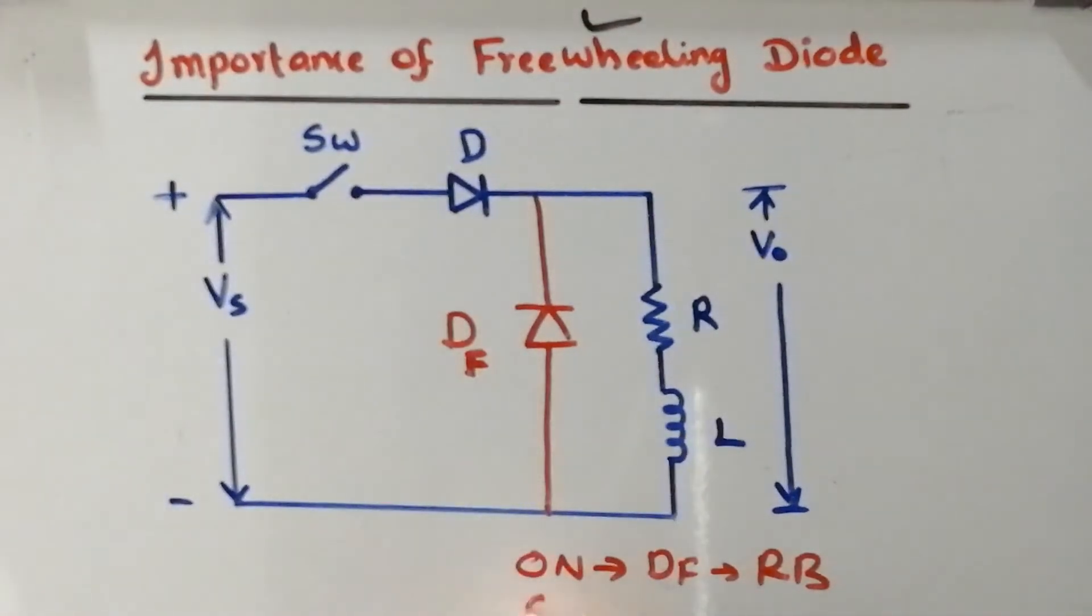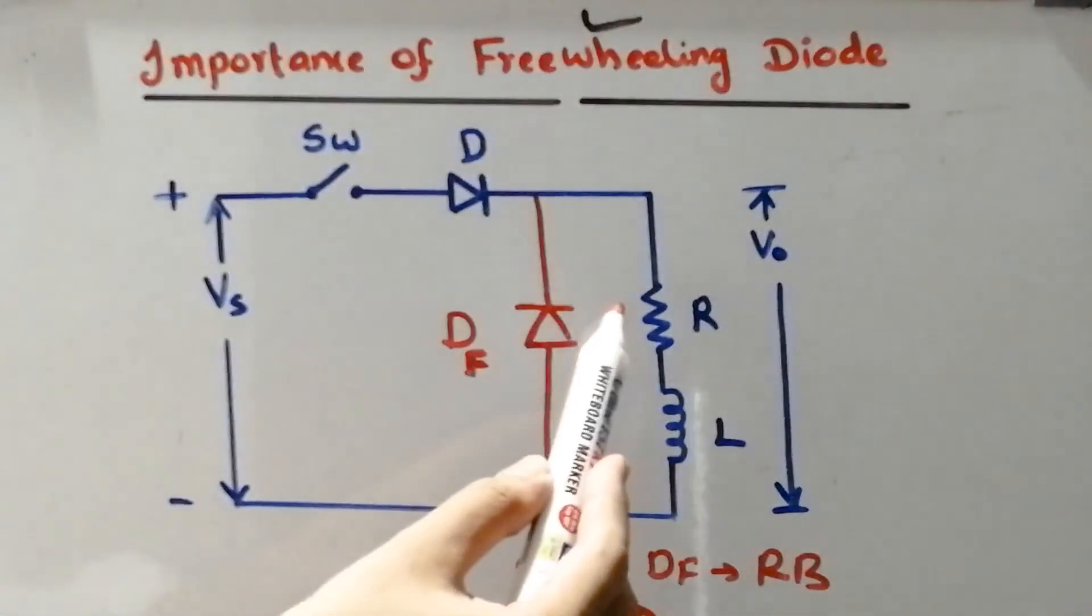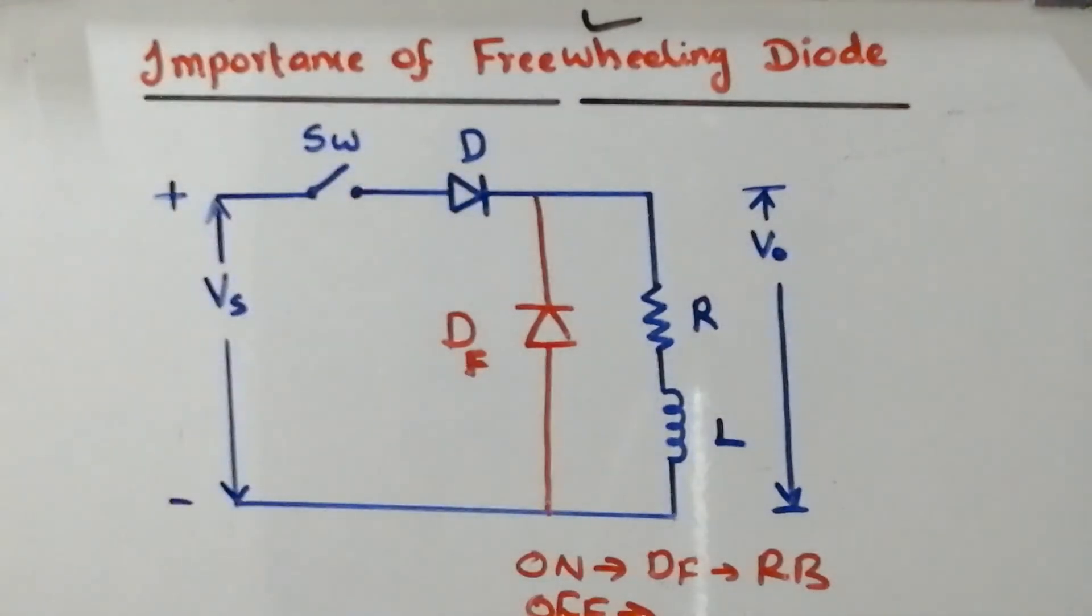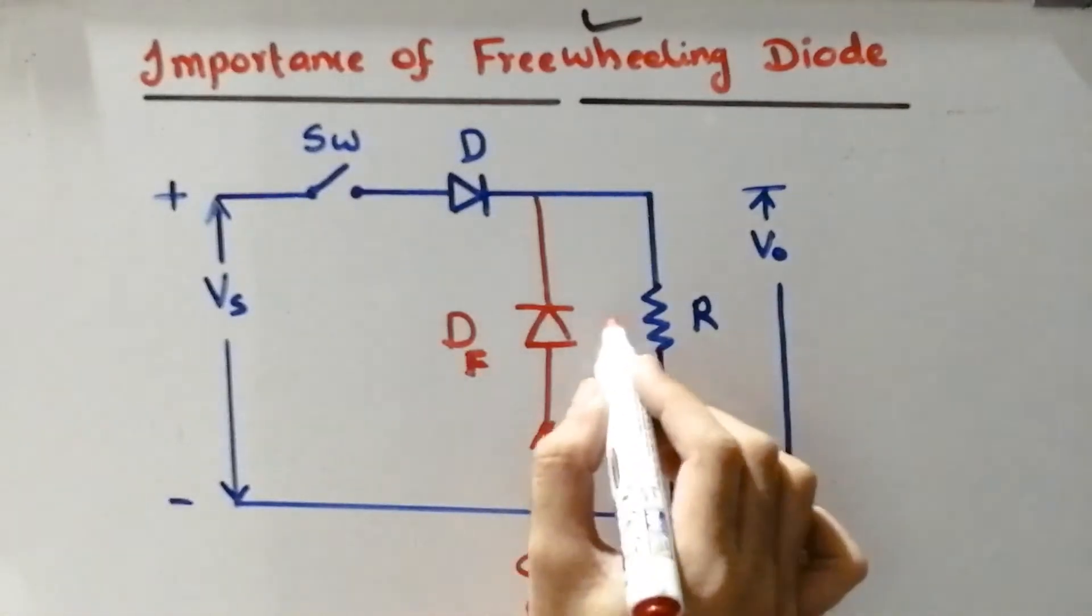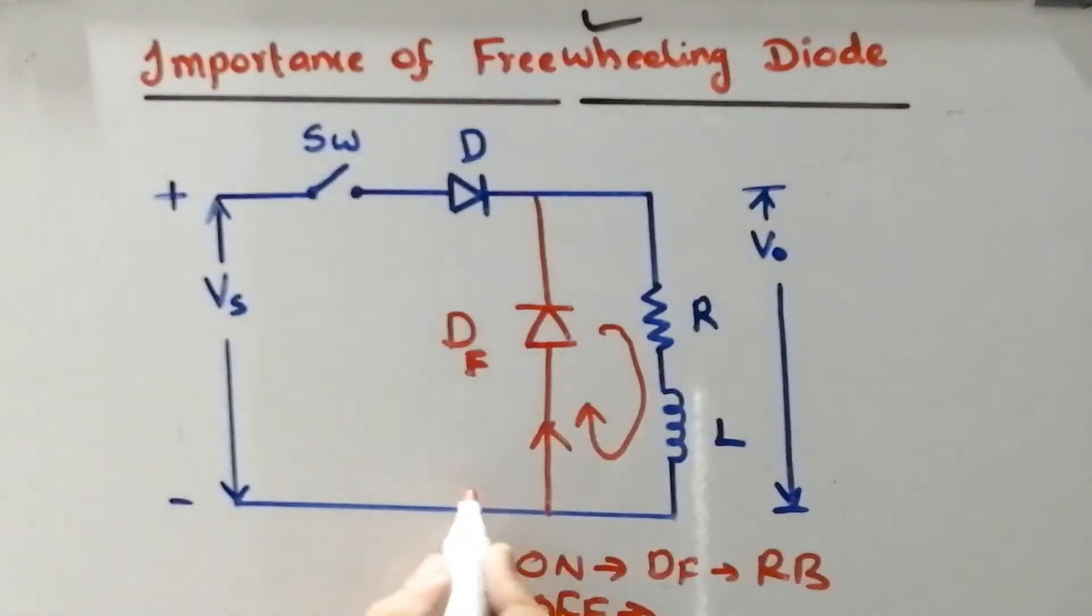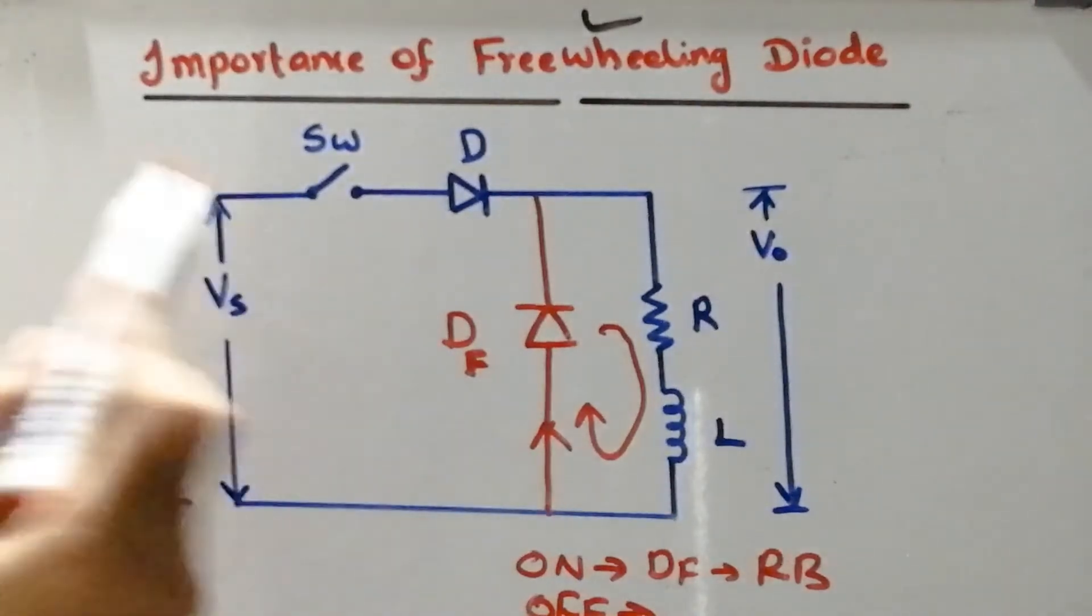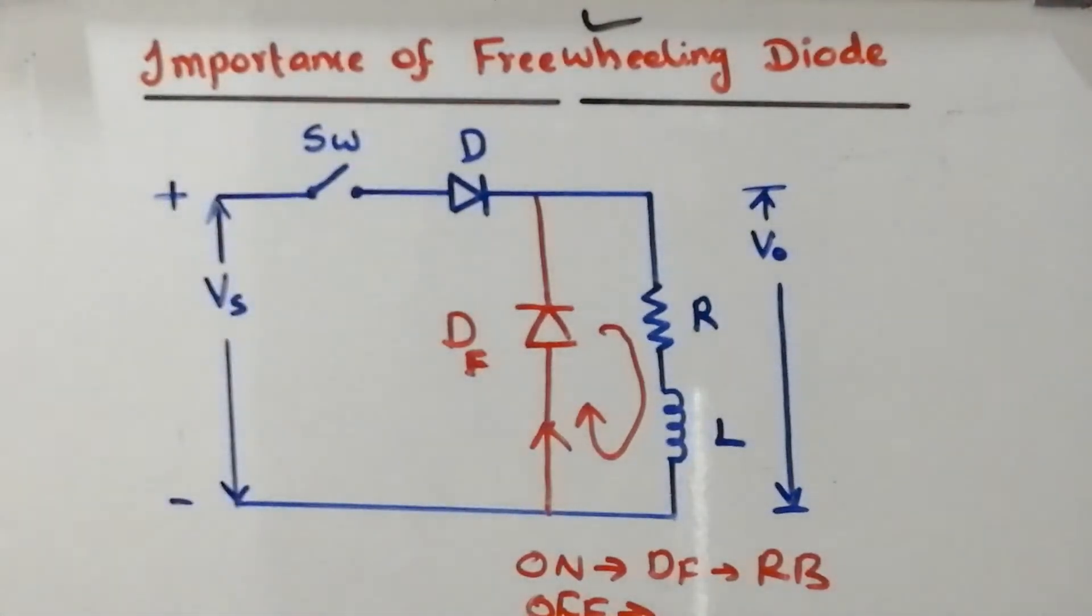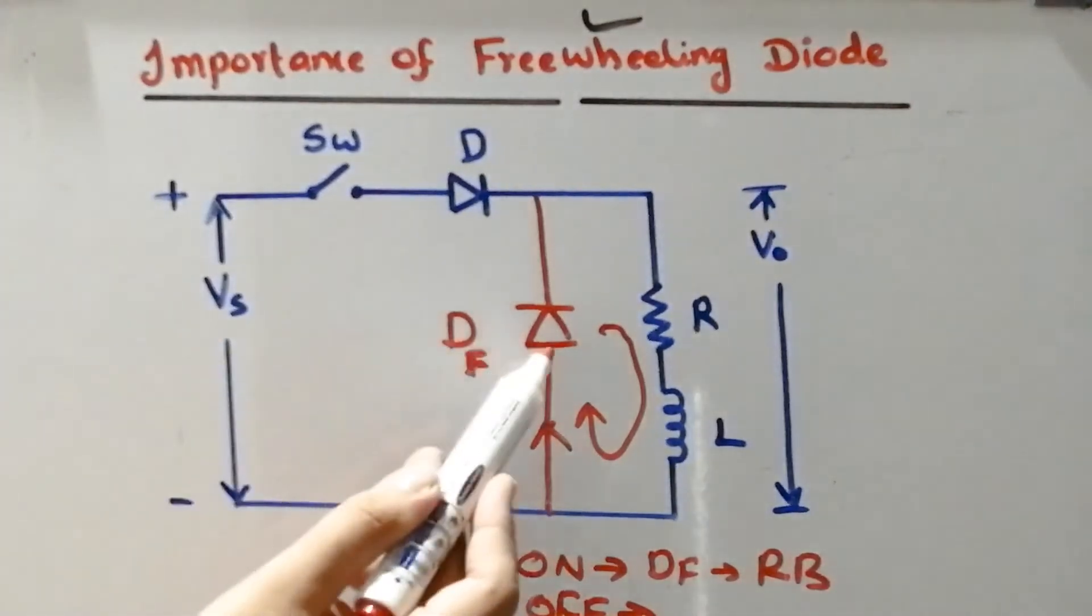During off condition, instead of directly dissipating energy through the circuit elements, the freewheeling diode will produce a different path. The energy will be dissipated in this way. Therefore we can overcome the spark through the switches and the diode can be protected. It protects the remaining elements which are connected in the circuit, thus ensuring protection against the reverse current. That is why we are going to use freewheeling diode.